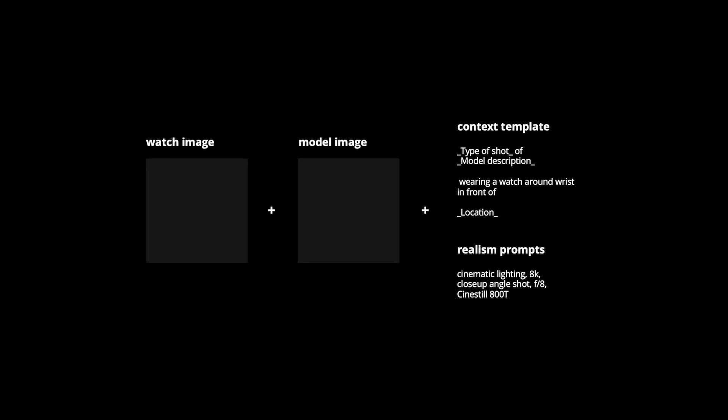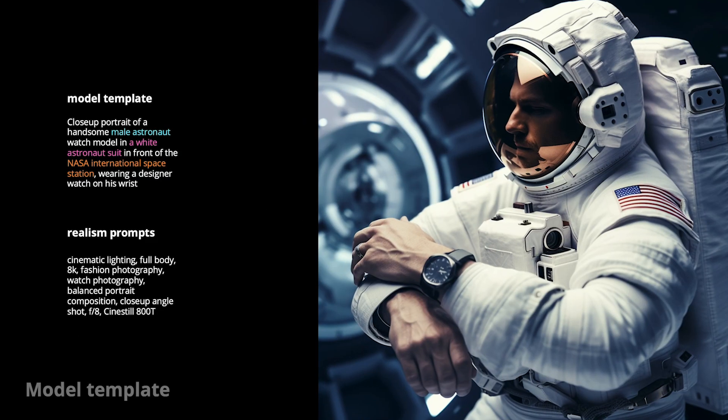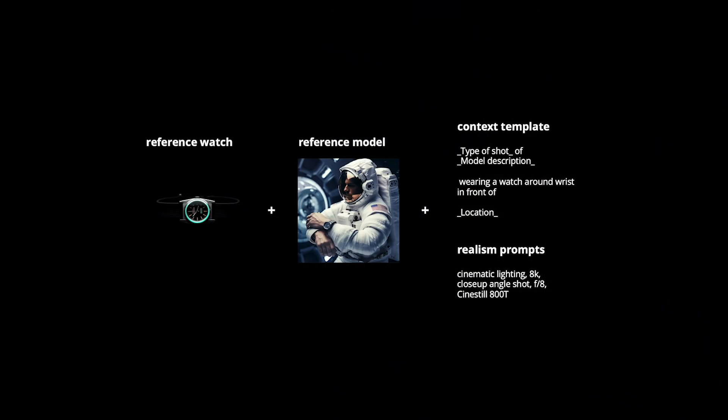I definitely did try putting the watches on humans, but it wasn't easy. Here's how I did it. For the process that I used, it requires two images: a model image and a watch image, and a prompt template as well to help get the final outcome. For the watch image, you can choose an image that you have already generated. For the model image, it's relatively easy to generate a model that you desire. But what's really important is to choose a model that is already wearing a watch, so that AI knows where to place your watch designs. Once you have your model image, you can now combine it with a context template that I've created.